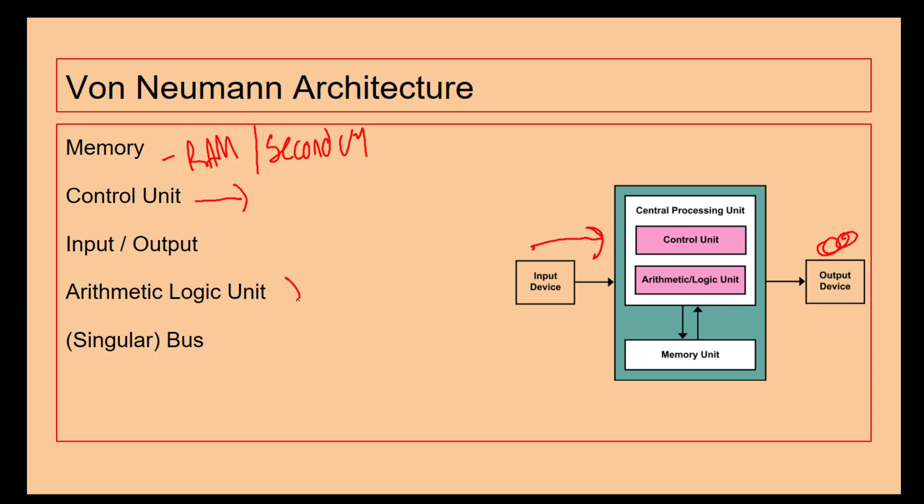We've got the arithmetic logic unit which does any comparisons of data or any maths, and then we've got a bus which shares and sends the information. The emphasis here is on the singular bus because there's only one bus, one way for the information to flow around the CPU, which can result in Von Neumann bottlenecks. If we've only got one bus, one way of data being shared, then obviously there's going to be delays. Exactly the same issues with a bus inside a CPU.